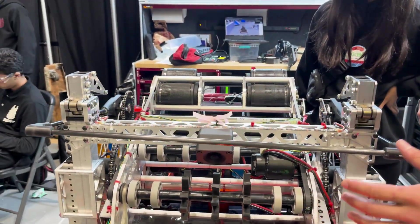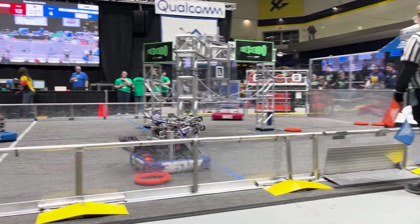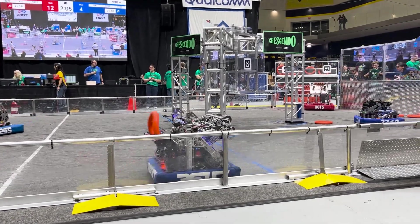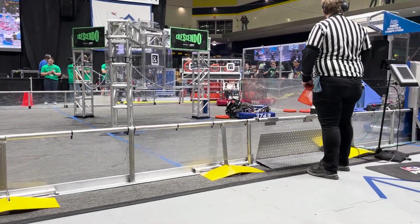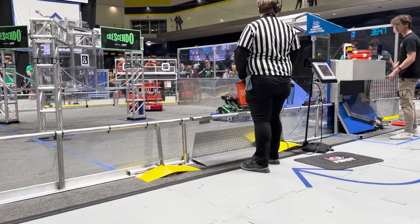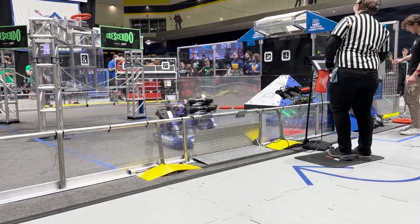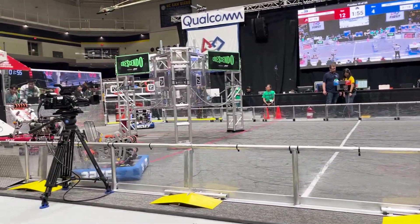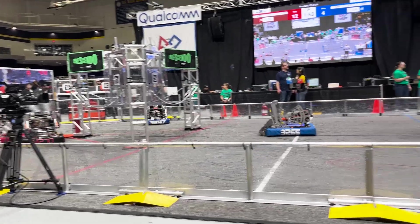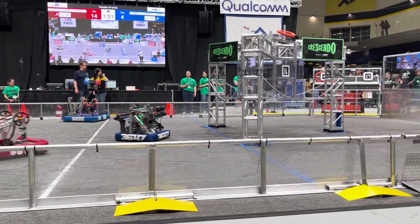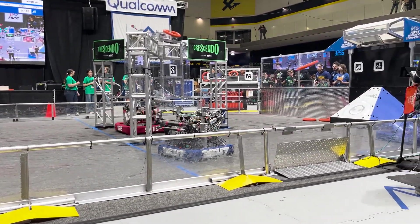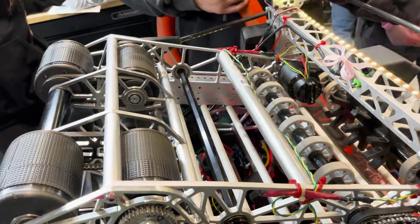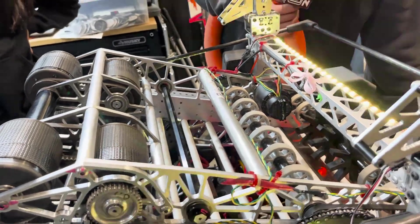And we just want to make everything automatic this year. So pretty much the driver only has three real buttons which are shoot, amp, and intake. The amp button will just completely automatically align him to the amp and he just has to release it to shoot. The shoot button will just completely spin the shooter to the speaker, it'll move the pivot angle and spin up the shooter, releases the shoot.